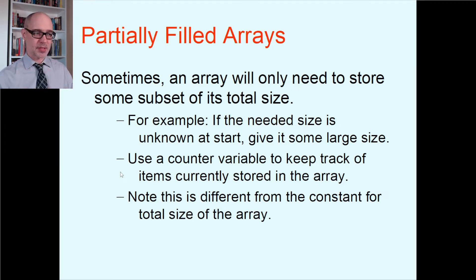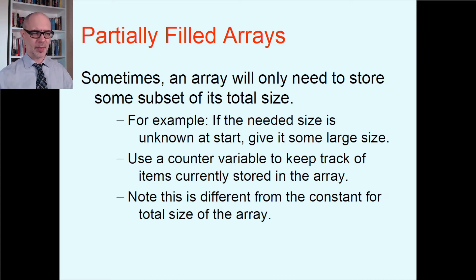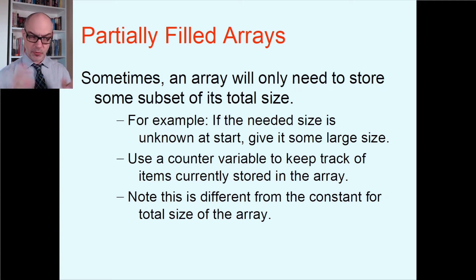As the user enters data, you use a counter variable to keep track of how many pieces of data they entered. Then you can use that counter variable for processing — finding the sum, average, minimum, maximum, or printing. You'll have a separate variable for how many things the user entered, which is different from the constant for the total size of the array. You might have an array size 100 but the user only typed in 30 things, so you hold the 30 in a variable. The user can enter 5, 6, 30, or 80 things — that gives a lot more flexibility.